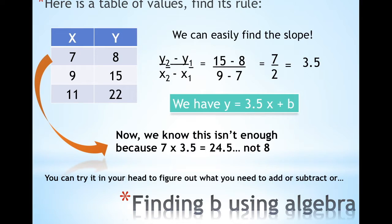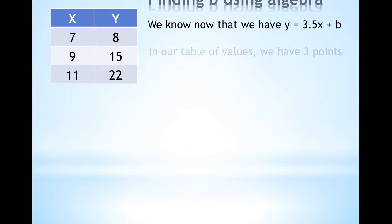You can try in your head to figure out what you need to add or subtract, or I'm going to show you something a little bit new. At this point we know that we have y = 3.5x + B.